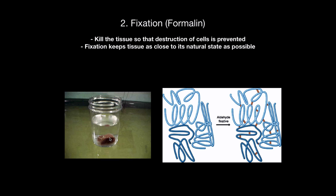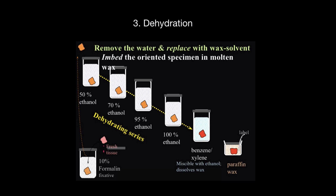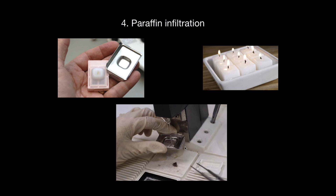After fixation, you need to remove the water from inside the tissue and replace it with a wax solvent like paraffin. You take it through gradually increasing concentrations of alcohol so that all the water can be diffused out. After removing the water, you dip it in paraffin — which is the same material you'd find in a candle. This is how we do it in the laboratory I work in: we take the tissue and dip it in paraffin, and then we get what are called tissue blocks, which will actually stay preserved like that forever.